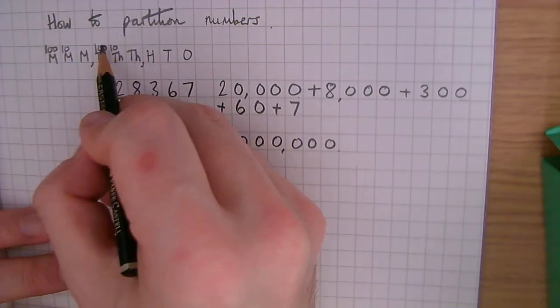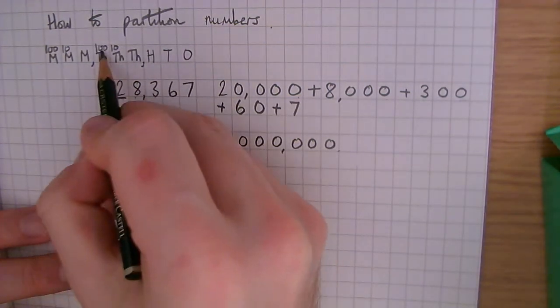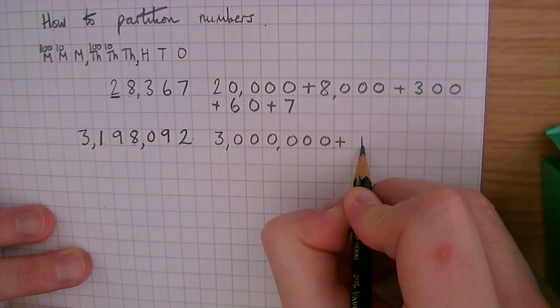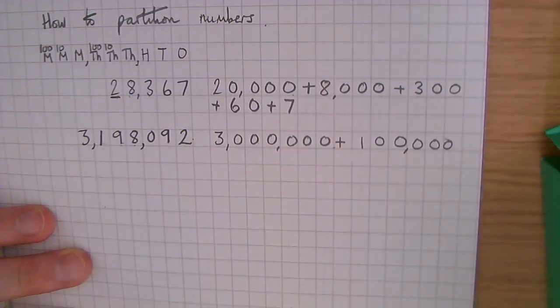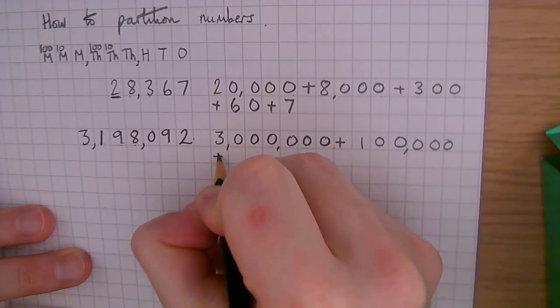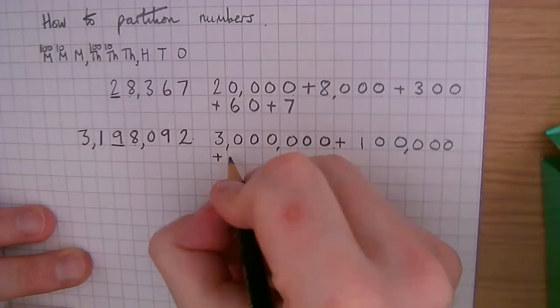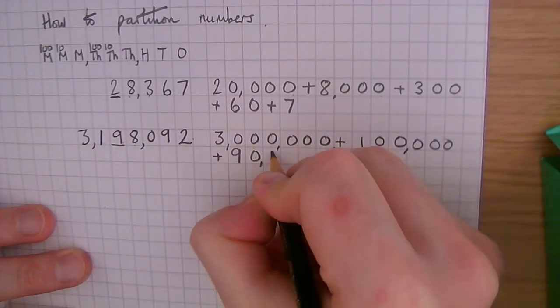Then I've got here one, that's one hundred thousand, one hundred comma three zeros thousand, add ninety thousand.